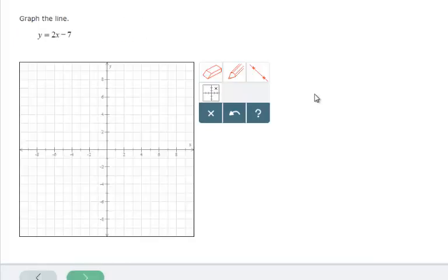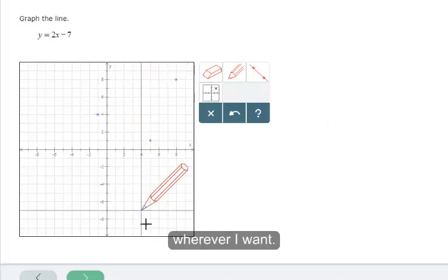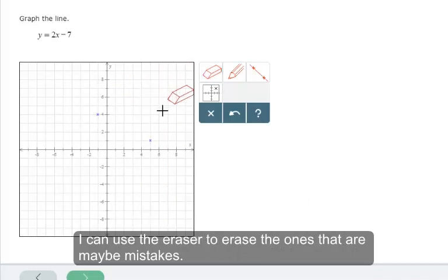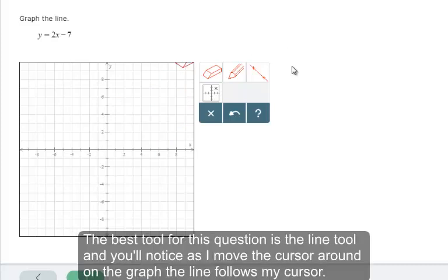This question has four tools along with the clear all, undo, and question mark. I'll talk about the point tool later on. The pencil, I can put a point wherever I want. I can use the eraser to erase the ones that are maybe mistakes. The best tool for this question is the line tool.